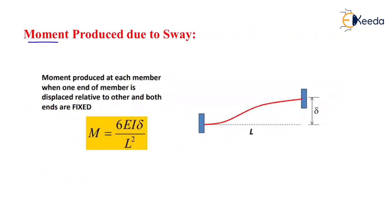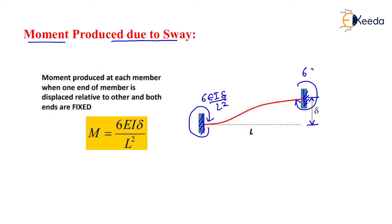We now examine what moment is produced due to sway. Consider a beam whose both ends are fixed. If there is a sway of delta amount, the moment generated at both fixed ends will be 6EI·delta divided by L². So the moment produced at each end when one end of a member is displaced relative to the other — with displacement delta and both ends fixed — is 6EI·delta upon L² at both ends.